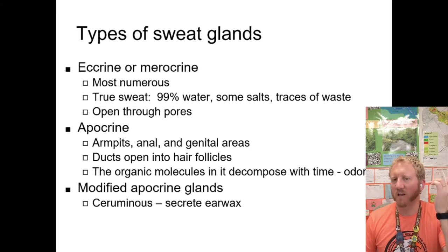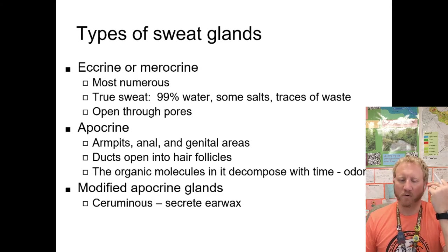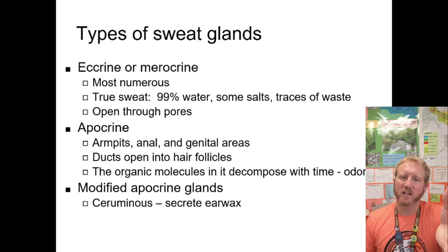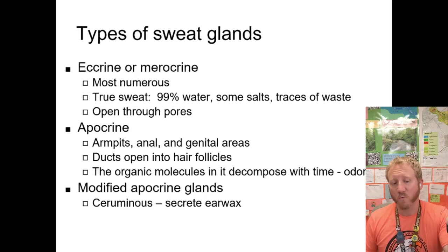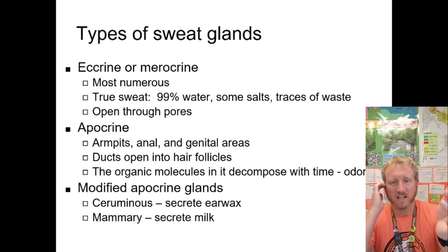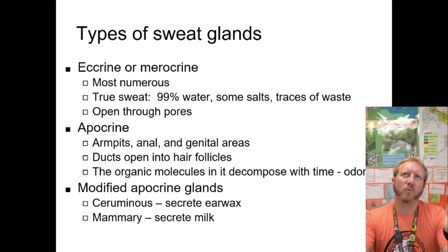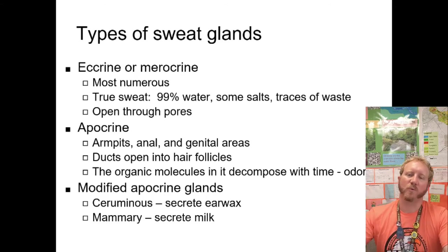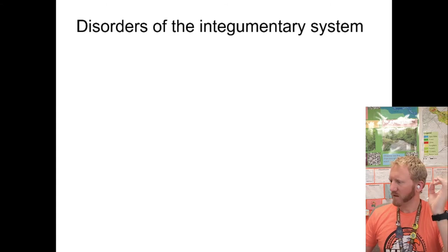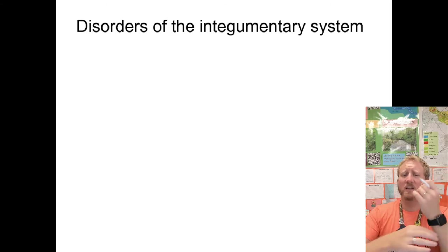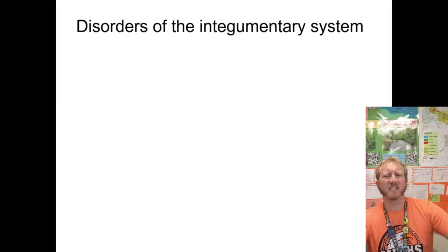There are also modified apocrine glands, found in two places: ceruminous glands in the ear canals, which secrete earwax, and mammary glands in females, which have adapted to secrete milk. We'll get into milk production when we cover the reproductive unit.